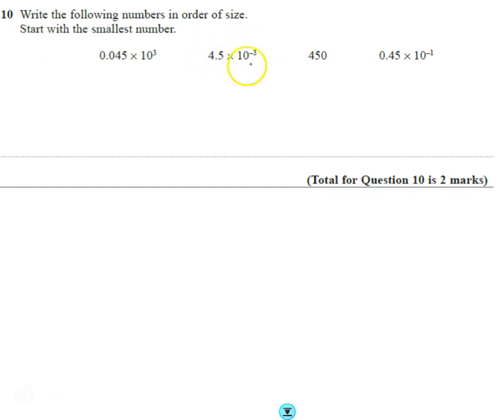So really this isn't in one instance proper standard form, but if we convert them all to ordinary numbers, so this is with the decimal point 3 spaces, that's the number 45, with the decimal point 3 spaces but the other way is 0.0045.